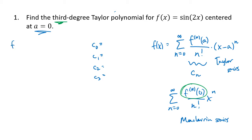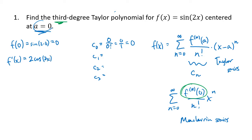For f(x) = sin(2x) centered at a=0, we plug in 0: sin(2·0) = 0, so c0 = 0/0! = 0. For c1, the first derivative is 2cos(2x). Plugging in 0 gives 2·cos(0) = 2, so c1 = 2/1! = 2.